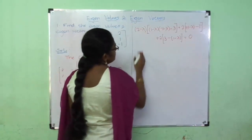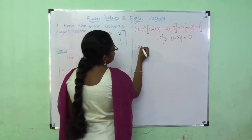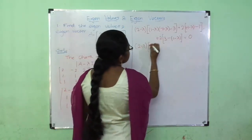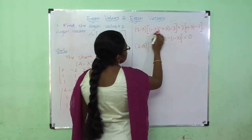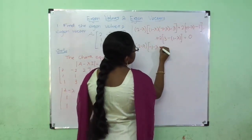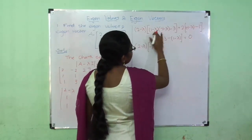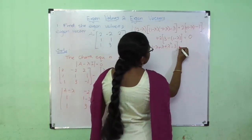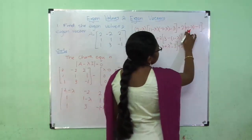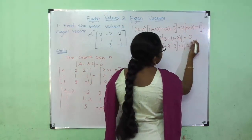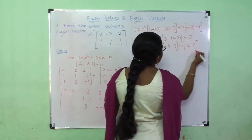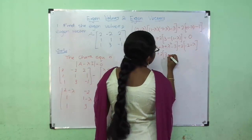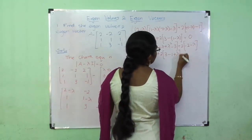We simplify: (2-λ) times [(-1)(1-λ) + (-λ)(-1) + λ² - 3] plus 2 times [(-1) - (-λ)] plus 2 times [3 - 1 + λ], which is equal to 0.